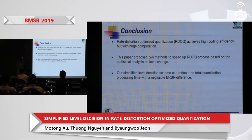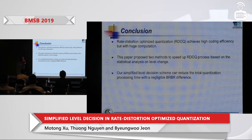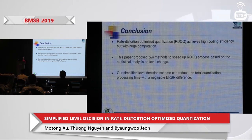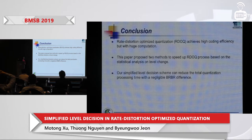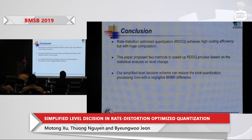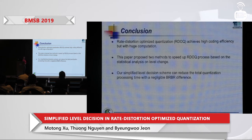In conclusion, RDOQ achieves very high coding efficiency but with huge computation overhead. We proposed two methods to speed up the RDOQ process based on statistical analysis of level changes. Our simplified level decision scheme reduces processing time with negligible BD-BR difference. Thank you.